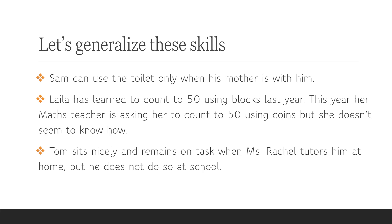Third example: Tom sits nicely and remains on task when Miss Rachel tutors him at home, but he does not do so at school. Tom needs to generalize the skill of sitting and remaining on task across different settings, including school. He also needs to generalize it across different people — remaining on task with Miss Rachel, Mr. Tom, Miss Leila, and his mother if she is tutoring him. He also needs to maintain the skill over time.